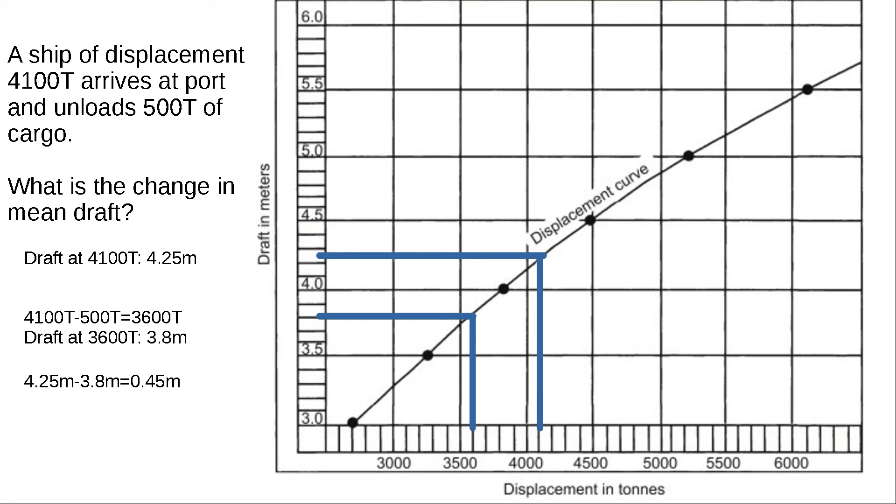Now finally, look at the difference in these two values. It gives a change in mean draft of 0.45 meters. We know that since we're unloading cargo, this is going to be a reduction in draft by 0.45 meters.